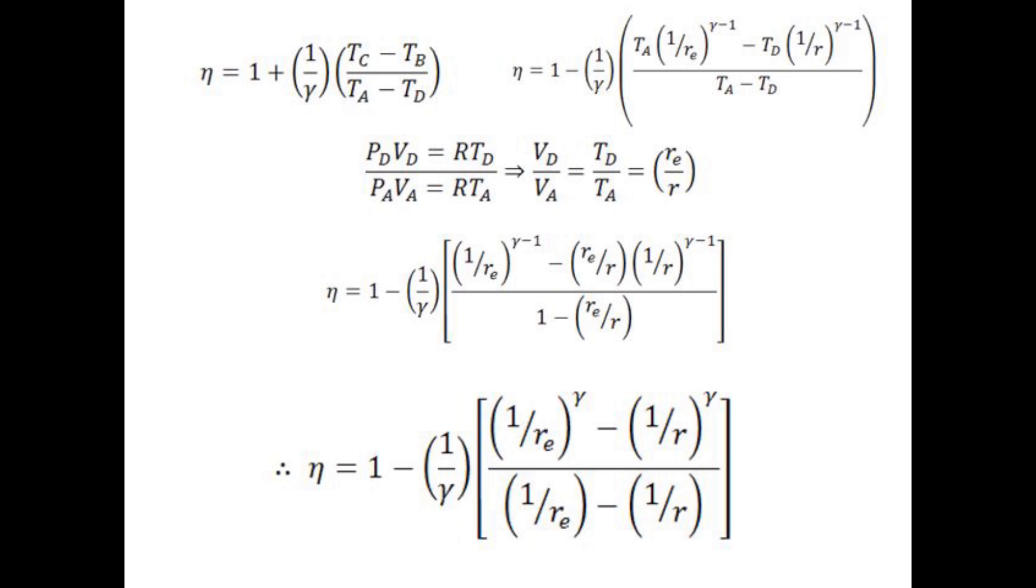Now from here we need to eliminate the temperatures T sub a and T sub d, for they are still hard to measure. So we're going to use the ideal gas law. We use it with P sub d and P sub a across the isobar, which cancel when dividing the two equations. R also cancels, so you have T sub d and T sub a in terms of V sub d and V sub a. And of course, we can from there, since we know that V sub b and V sub c are equal to each other, when we divide the two compression ratios, they are the same as the volumetric ratios for V sub d and V sub a.